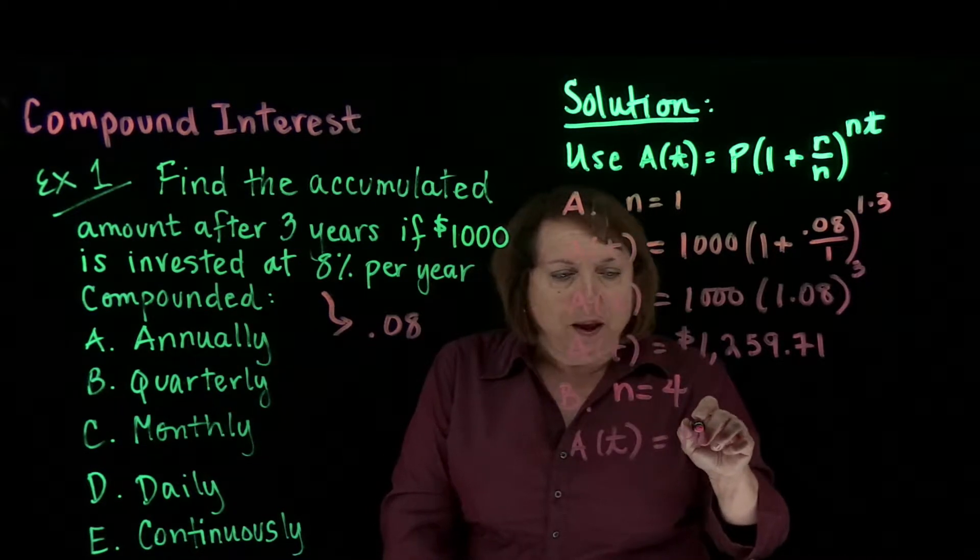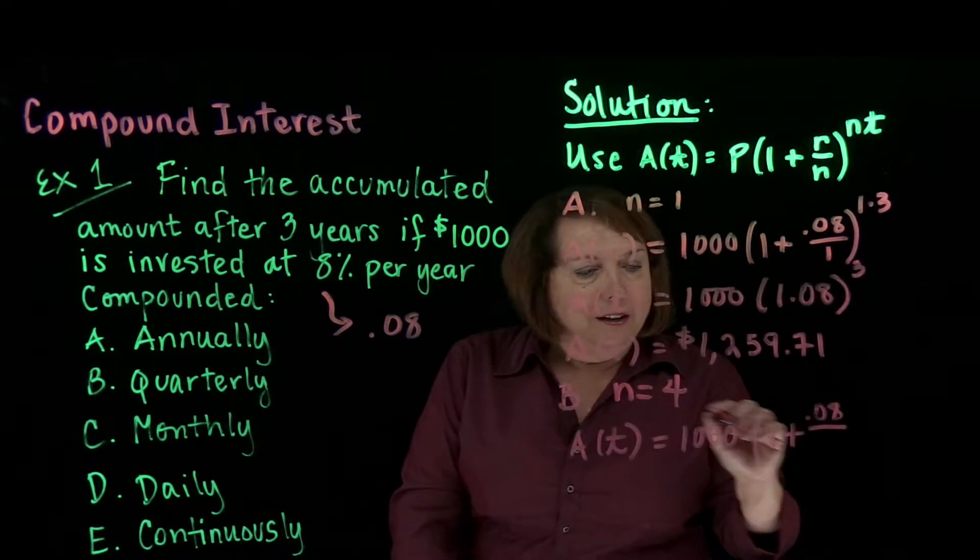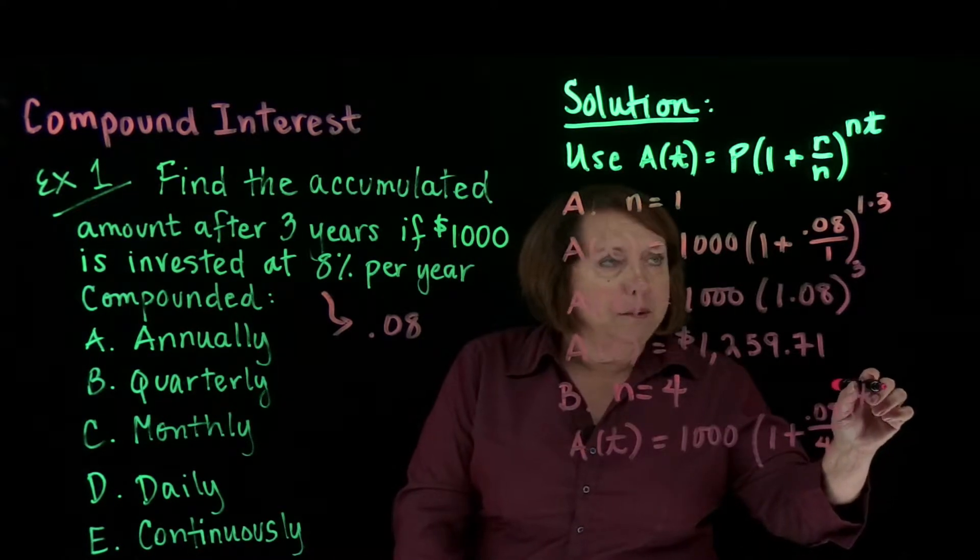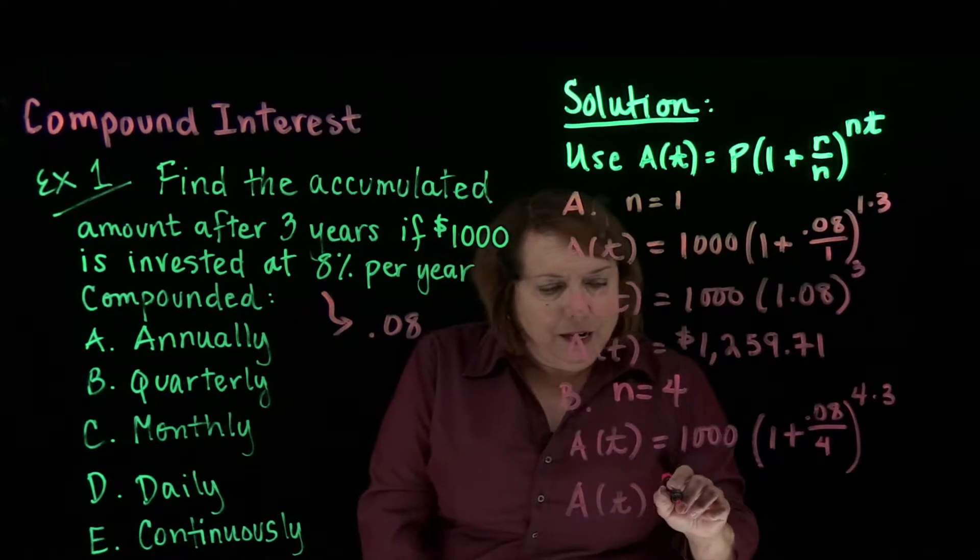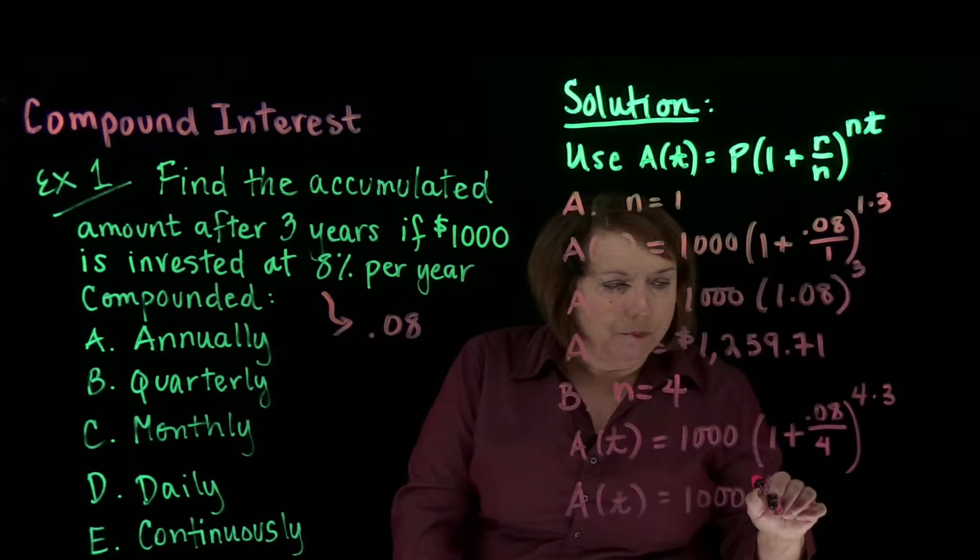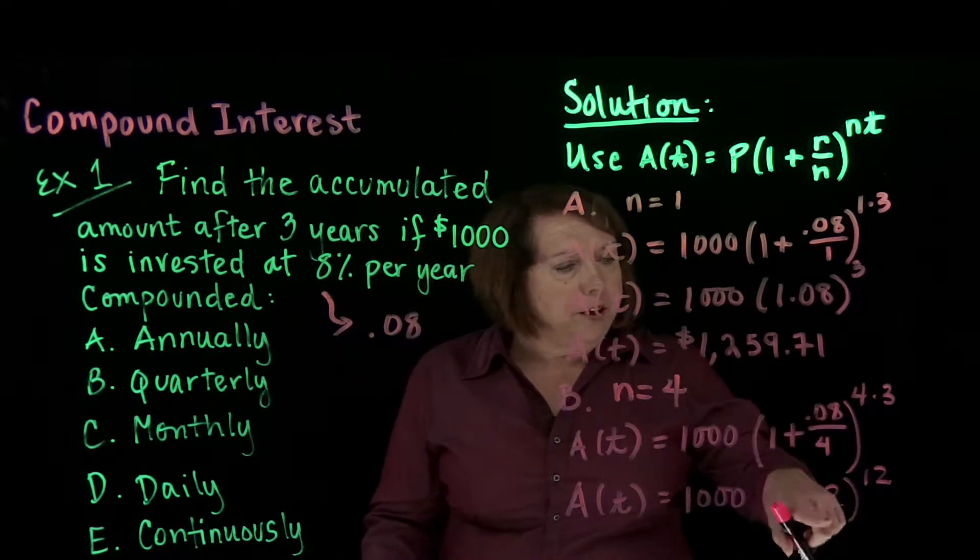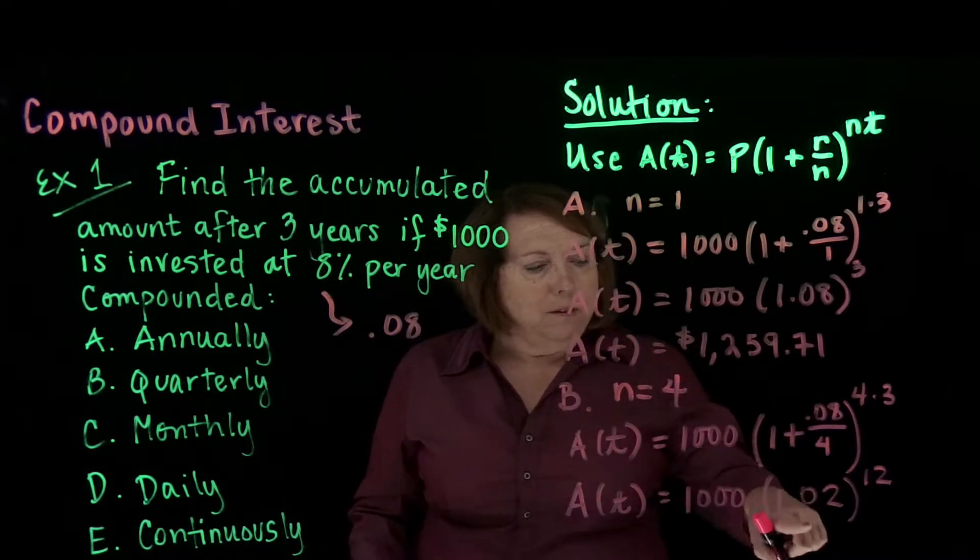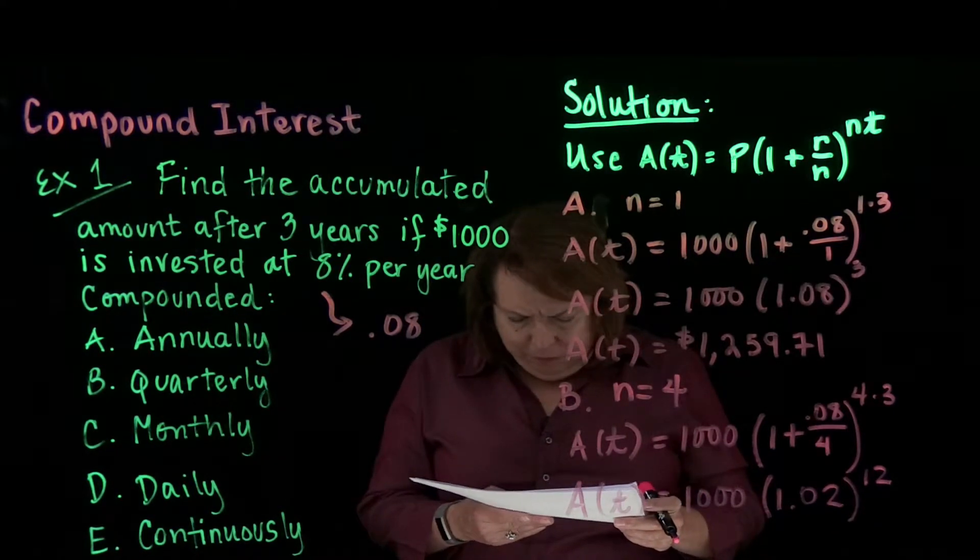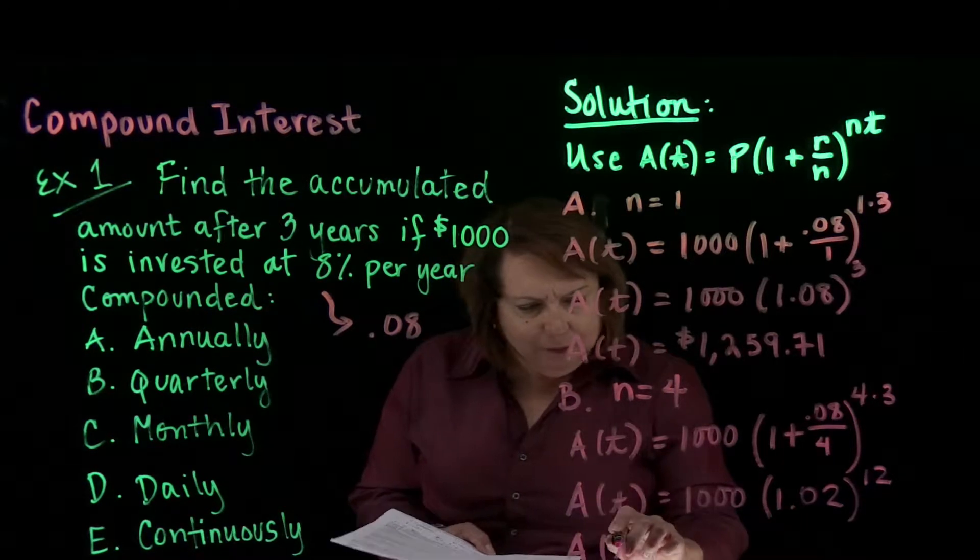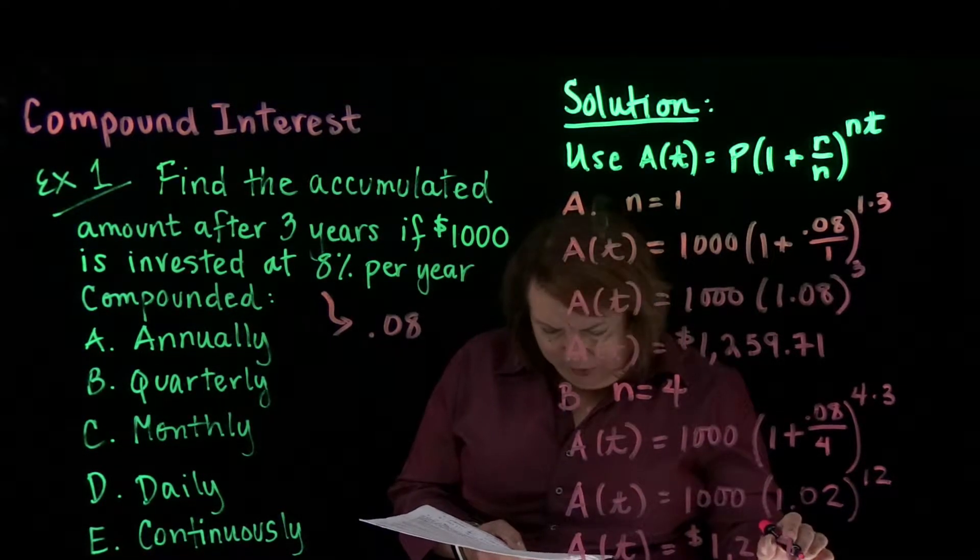So let's rewrite our function. It's N times t in the exponent. So we're raising it to the 12th power. Definitely need a good scientific calculator to do this work for you. So 0.08 divided by 4 should be 0.02, adding the 1, 1.02, raising it to the 12th power. And you should get $1,268.24.